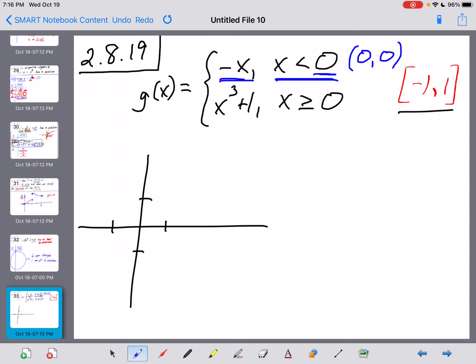That's going to be an open dot at zero, zero. And then it's just the function y equals negative x everywhere to the left of that. So we draw a little ray going out to the side right there. And that's what this thing looks like on the left hand side. That's y equals negative x for all x values less than zero.